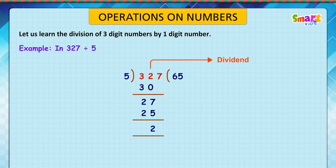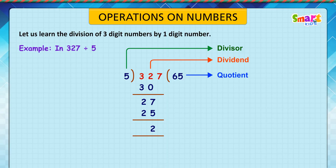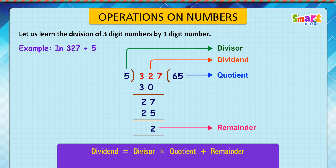Here, 327 is called the dividend. 5 is called the divisor. 65 is called the quotient. And 2 is called the remainder. We learn from this: dividend is equal to divisor into quotient plus remainder. 327 is equal to 5 into 65 plus 2, which equals 327.